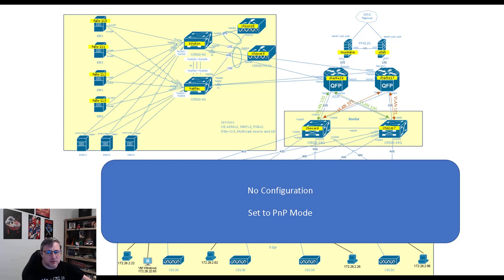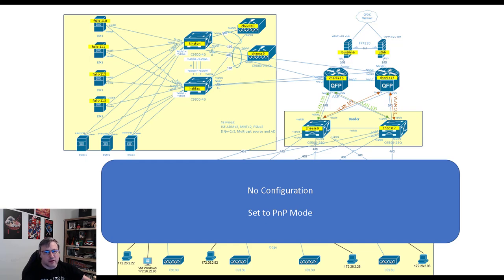LAN automation is used to bootstrap a greenfield Software Defined Access deployment. The devices are in PNP mode, and what we need to do now is get into DNA Center and configure CHEESE6 and CHEESE7 to be what are called seed devices. These are devices already discovered by DNA Center, already reachable on the network, and physically connected to devices that are in PNP mode. DNA Center can do LAN automation with devices that are up to two hops away from the seed devices — so through a switch, two hops away. Our setup works perfectly: we have the borders CHEESE6 and CHEESE7, then a distro, then an access or edge layer.